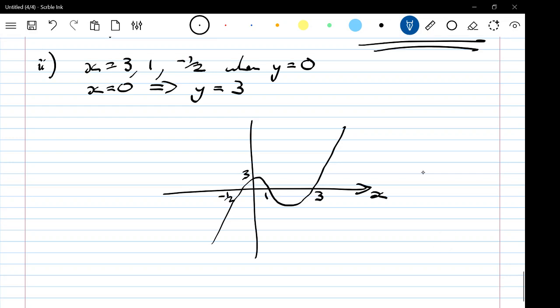There we go. There's x. There's y. One mark for the positive cubic graph. And one mark for the points of intersection.